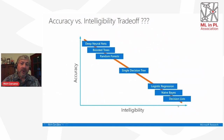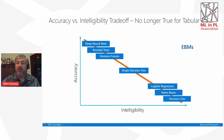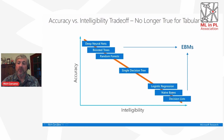You might have heard that there is a trade-off — that boosted trees and random forests are not very intelligible but very accurate, and that if you want to be intelligible, you're going to have to take a loss in accuracy. I'm going to show you that on tabular data this is just not true. We now have tabular learning methods such as EBMs — explainable boosting machines — which are now just as accurate as deep neural nets, boosted trees, and random forests on tabular data, and they're even more interpretable than methods like linear and logistic regression.